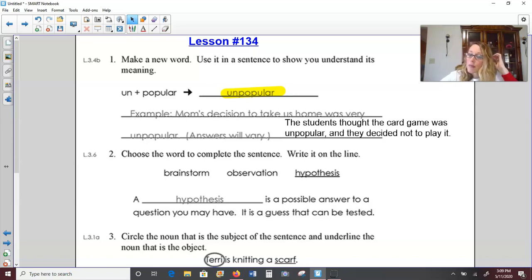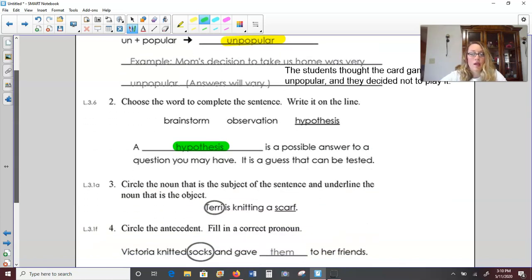Number two, choose the word to complete the sentence. We have brainstorm, observation, or hypothesis to choose from. A blank is a possible answer to a question you may have. It is a guess that can be tested. This would be a hypothesis. We often see this word used in science lessons, especially experiments, because you pose a question, make a guess as to what you think will happen, and then you do the experiment and test out to see if your hypothesis was correct.